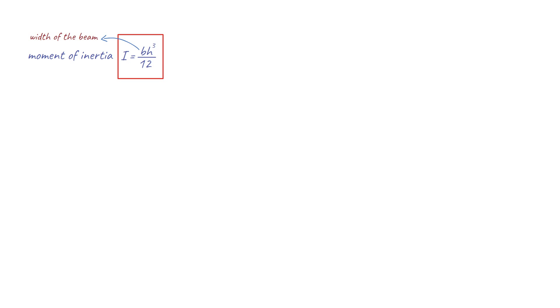This is represented by the equation where b is the width of the beam and h is the height of the beam. This formula is used to calculate the resistance of a beam to bending and torsional forces.